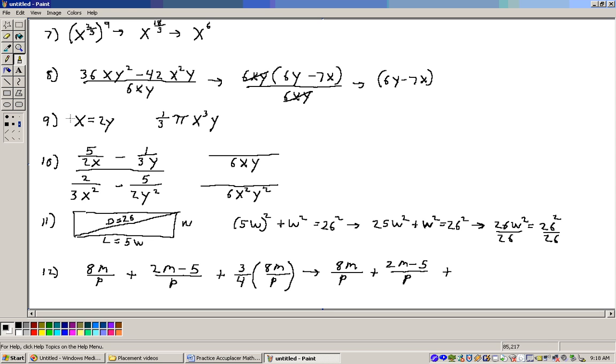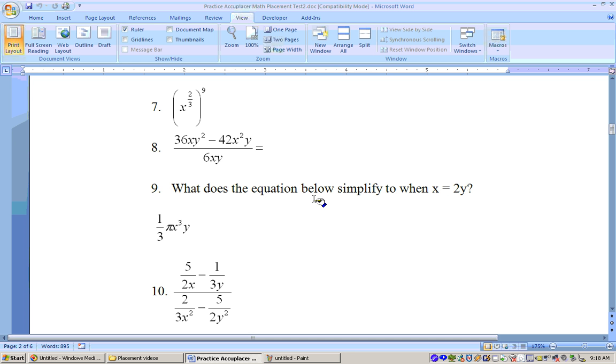On number 9, it says x equals 2y. Simplify this expression right here. If we have this expression, 1/3 π x³y, let's take a look at this here a second. That's this problem here. What does the equation below simplify to when x equals 2y? We're substituting 2y in for the x right there.